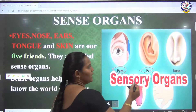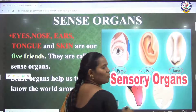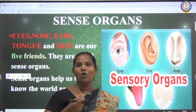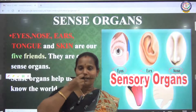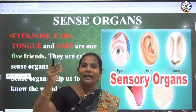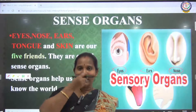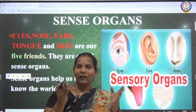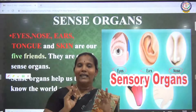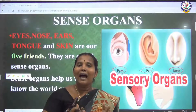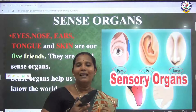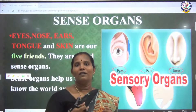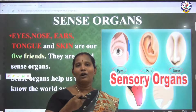Next one is the nose. We have the nose - this nose has two holes. Through these holes, we get the smell. In our surrounding, air is present. This air carries the smell, and that is how we can observe the smell through our nose.